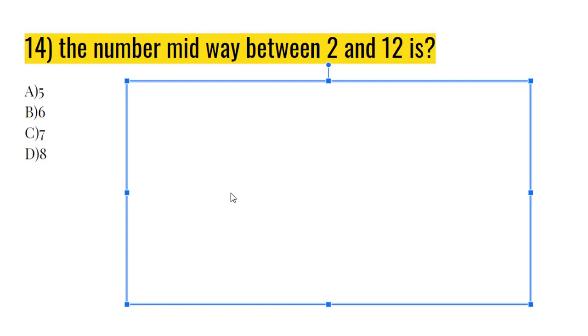Because midway means you have to find the average. So 12 plus 2 equals 14. And because you added two numbers, you divide the number, your final product, by 2. And you divide it by 2, and you get 7. So your answer again is 7C.